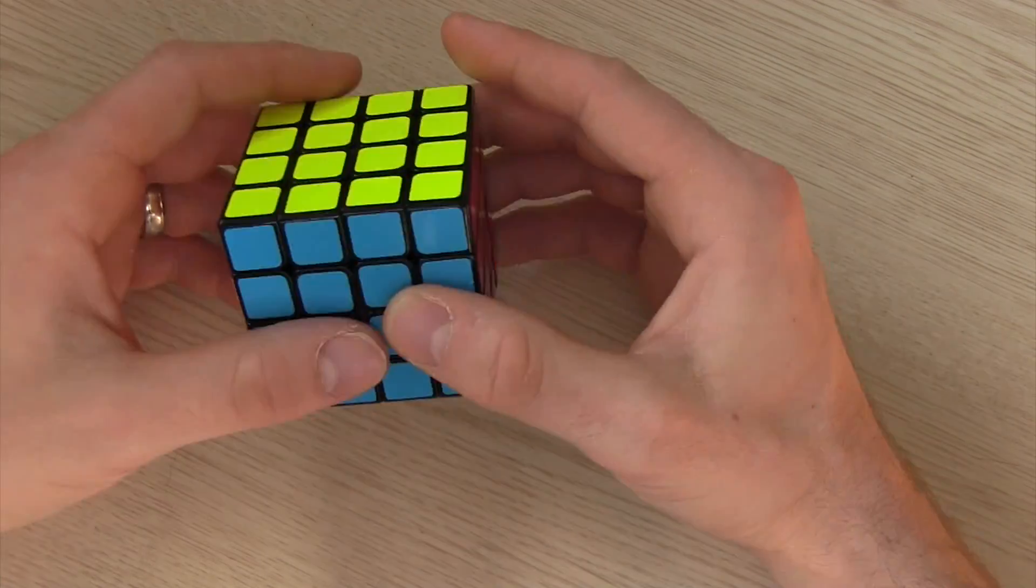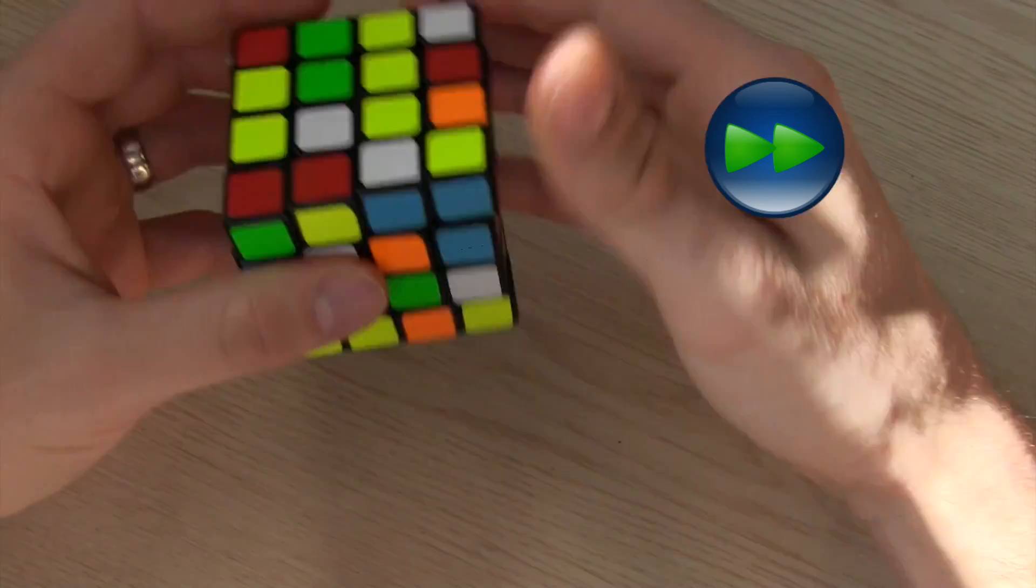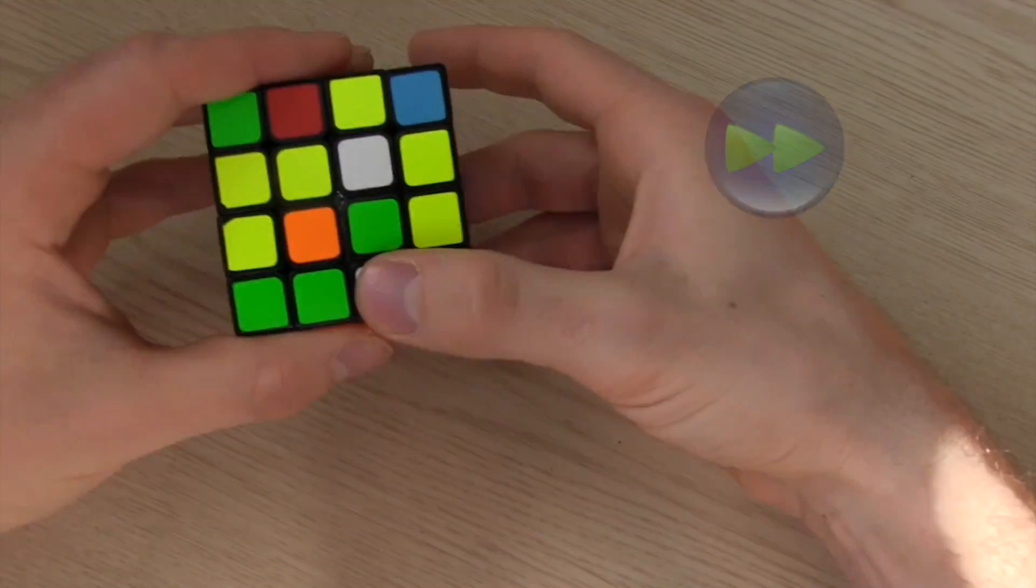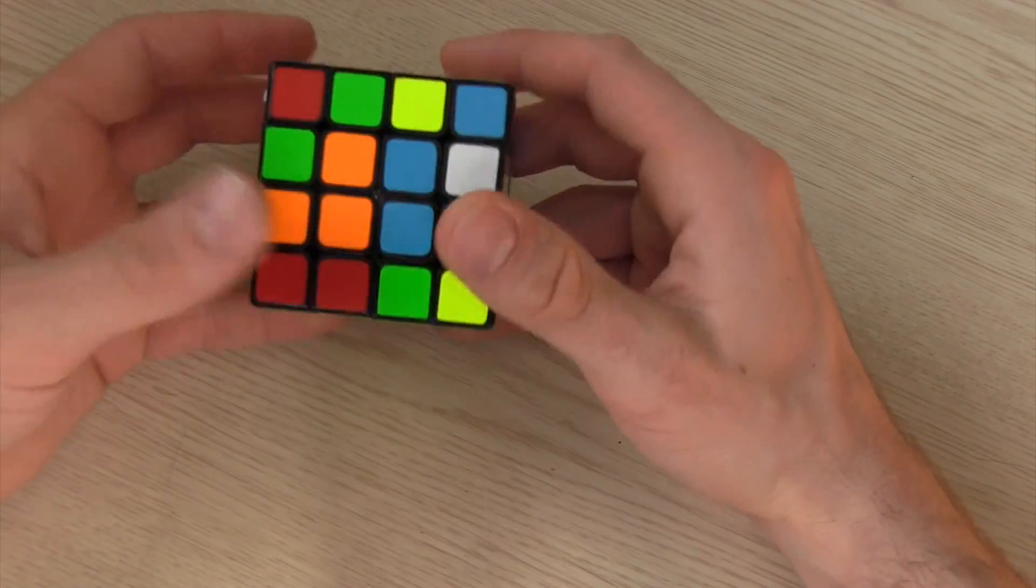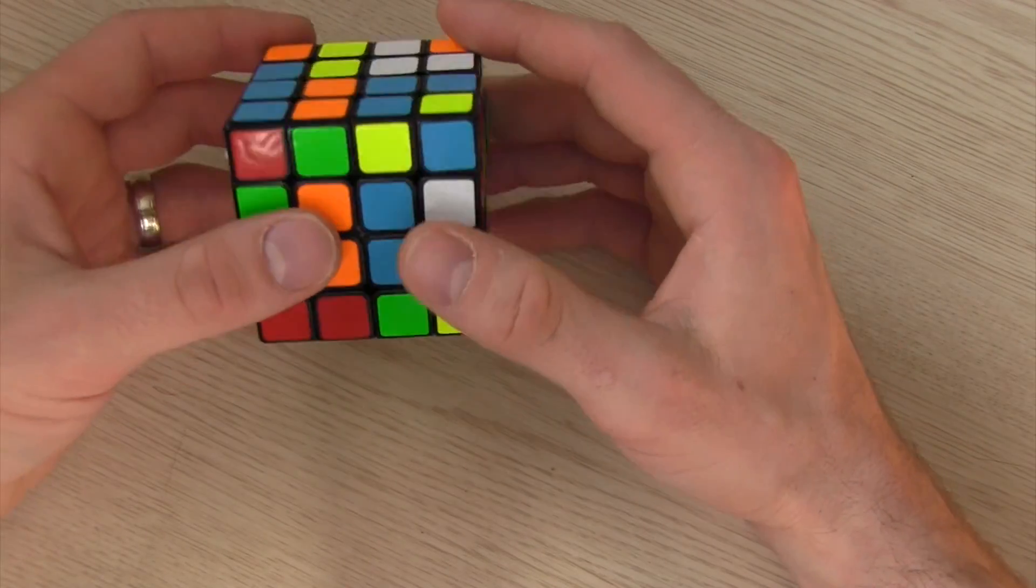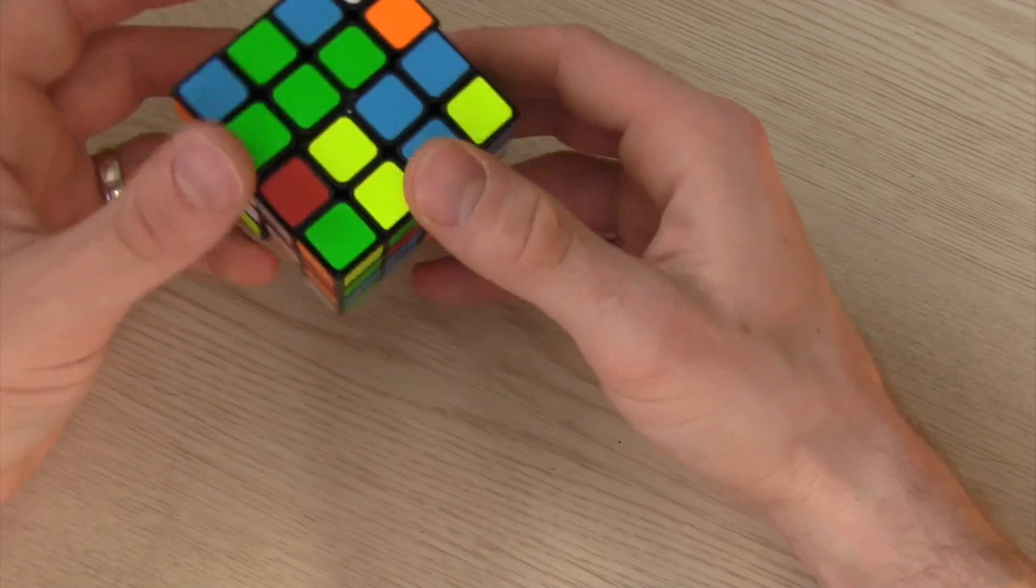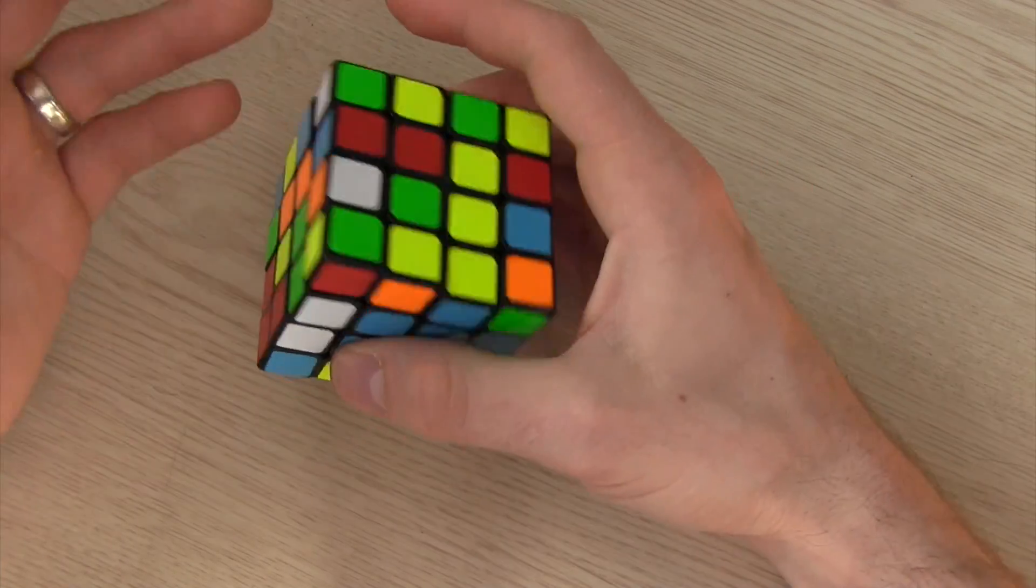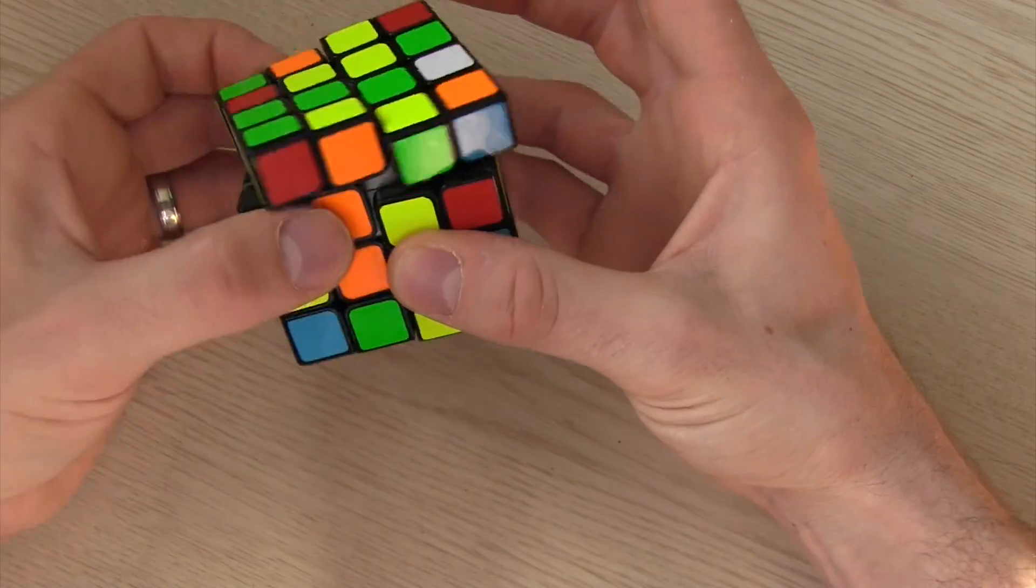So for example let's go through this. So first thing is solving the centers and I usually just do the white and yellow every time just because it's a little bit easier for me to see everything. Now I am solving behind a camera so hopefully I can do this as fluently as possible.